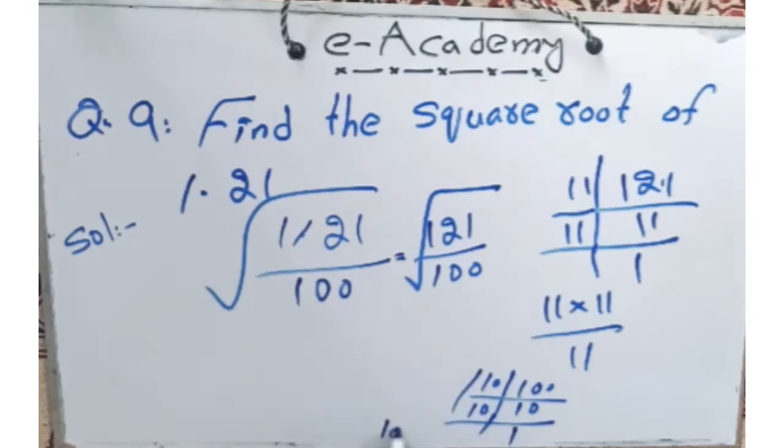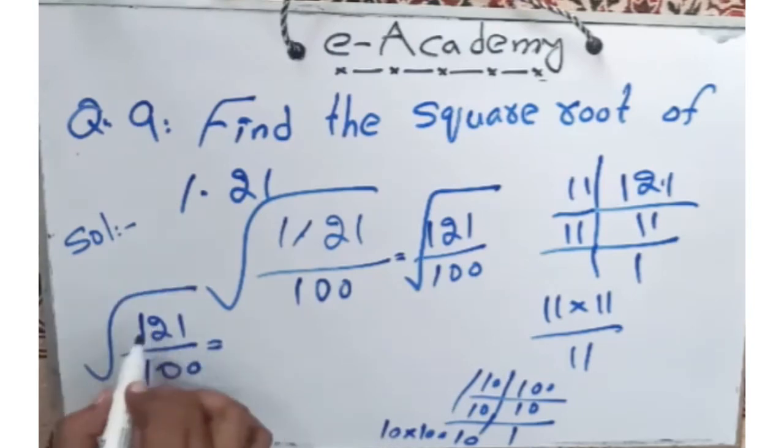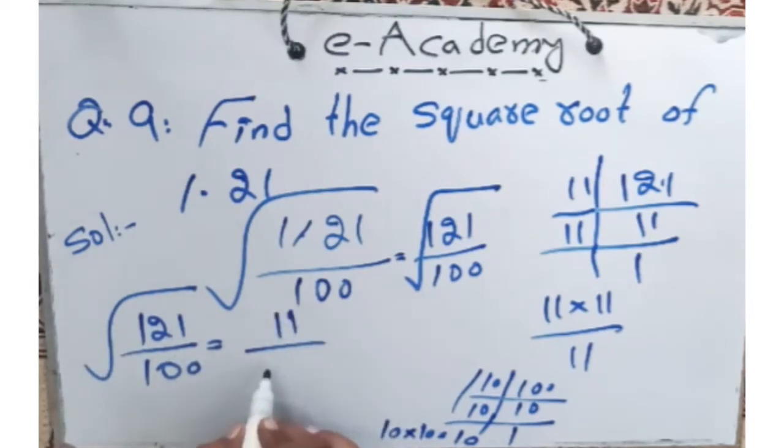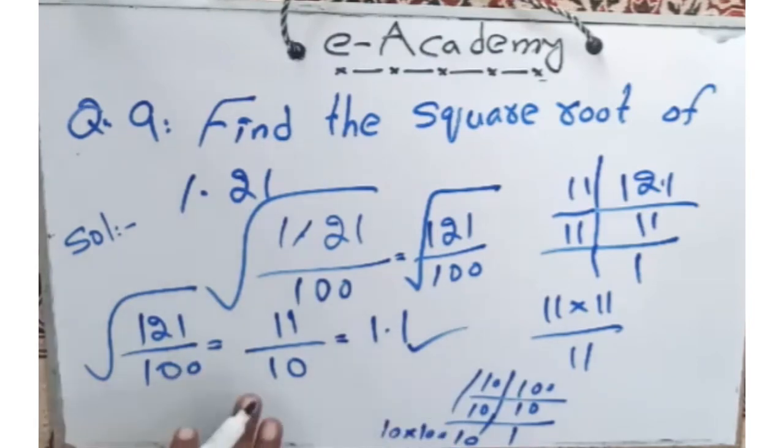The square root of 121 upon 100. If the square root of 1.21, then 11 upon 10. Then we take it to division, it will be equal to 1.1. You see that the square root of 1.21 is 11 upon 10.